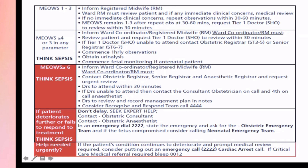If the score is four or more, the Tier 1 doctor or SCHO should review within 30 minutes. If the Tier 1 doctor or SCHO is unable to attend, the obstetric registrar (ST3 to ST5) or senior registrar (ST6 to ST7) should come and review. Early observations should be made — do a urine analysis and commence fetal monitoring if it is an antenatal patient.